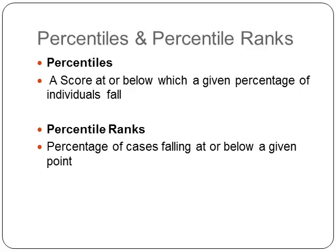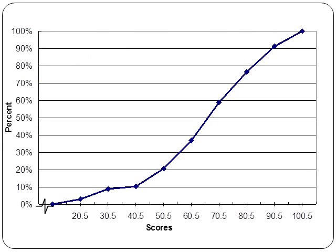Percentiles and percentile ranks: a percentile is a score at or below which a given percentage of individuals fall, whereas a percentile rank is the percentage of cases falling at or below a given point. Using an ogive chart, we can look at a score of approximately 50.5, go up to where the ogive meets the distribution, and read approximately 20%. Conversely, going across at 80% and down, we find a score of approximately 82.